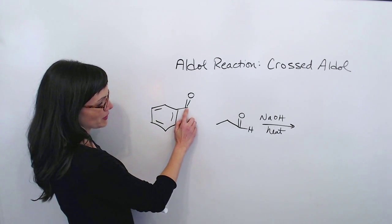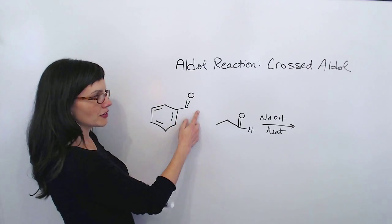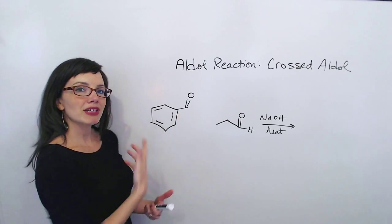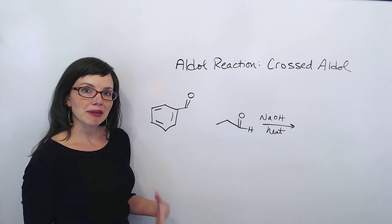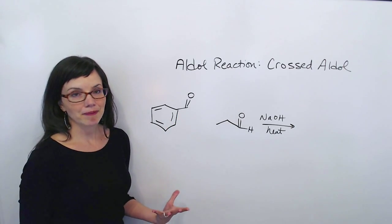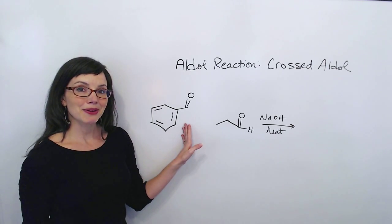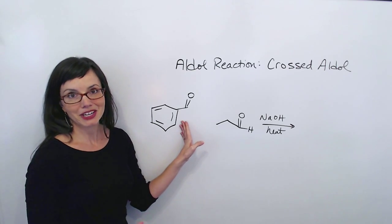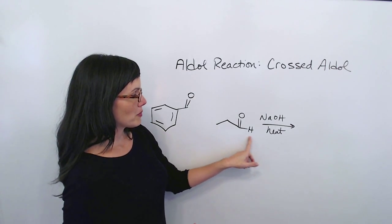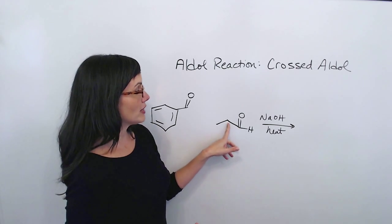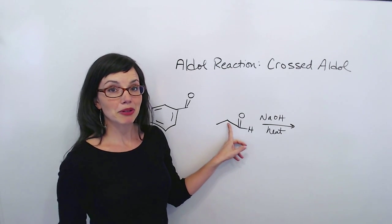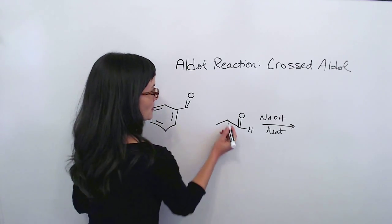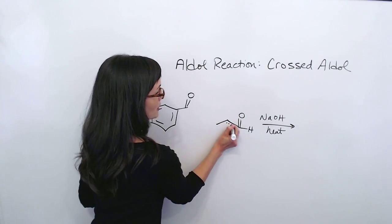There's probably only one alpha carbon here that you can choose from — you just have to find it. On this molecule, here's our carbonyl. On this side, there's just a proton. And on this side, we have an alpha carbon, but it doesn't have any protons. So it's not capable of forming an enol or enolate, meaning this molecule is not really capable of doing the attacking. On this molecule, we have a proton on this side, and we have an alpha carbon over here that is capable of forming an enol or enolate. This is the only one that's available, so this is the one we're going to choose to do the attacking.